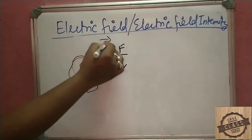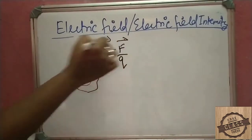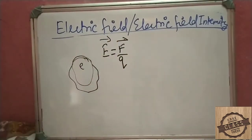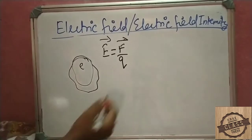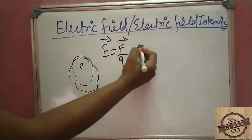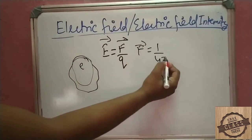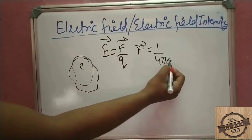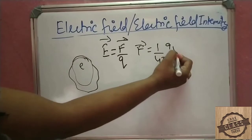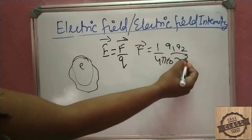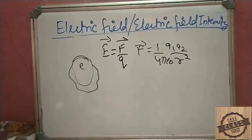E is the electric field intensity and F is the force. Now, the force formula from Coulomb's law: F is equal to 1 over 4 pi epsilon naught, multiplied by Q1 Q2 divided by R squared.